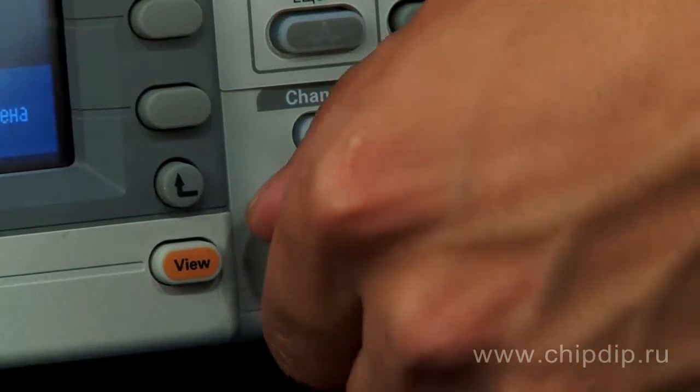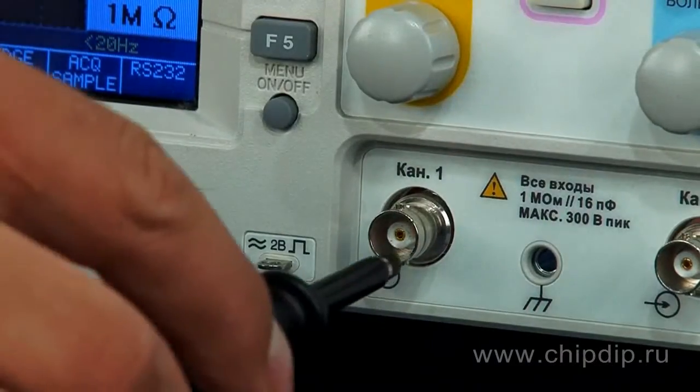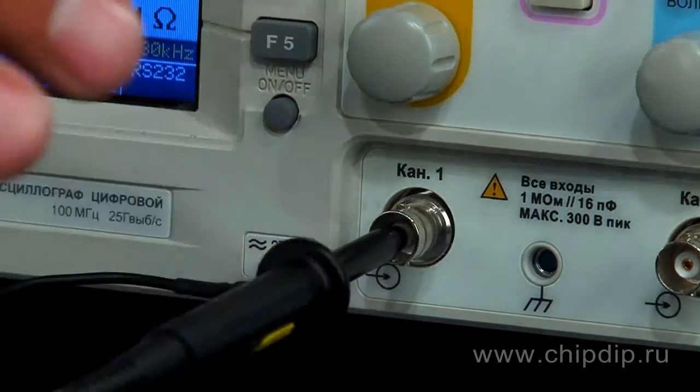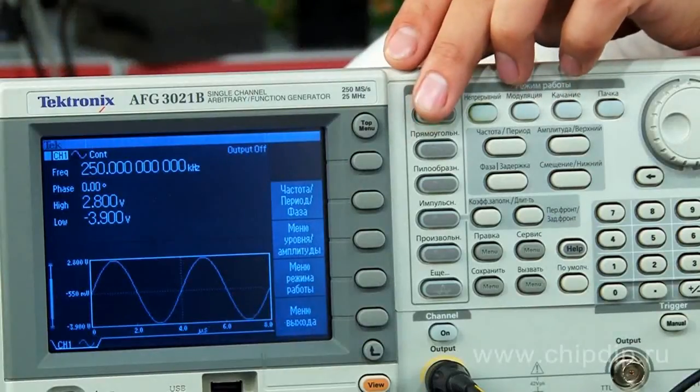Let us generate a sine wave signal and then view it on an oscilloscope. We connect the output of the generator to the input of the oscilloscope using a cable, choose signal sine, and push the continuous button.